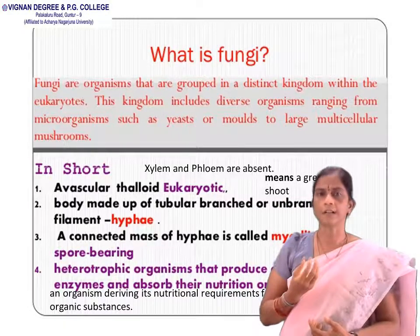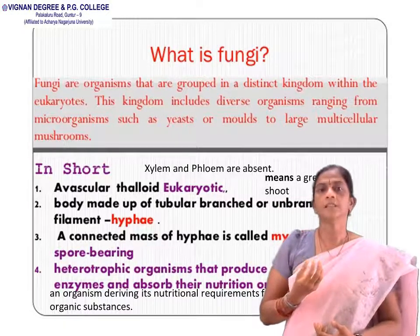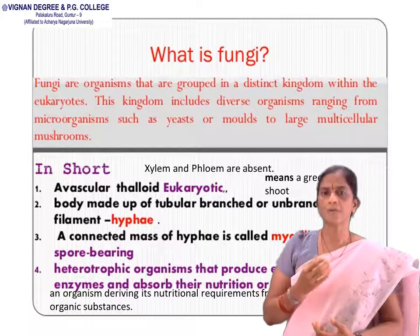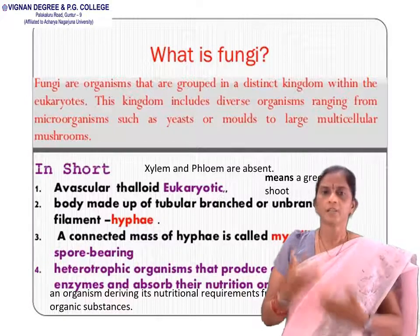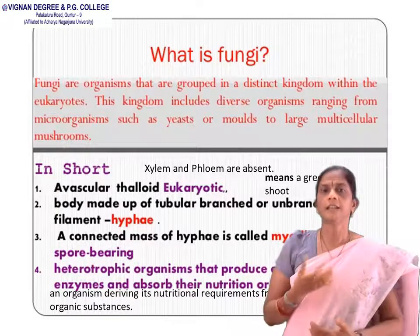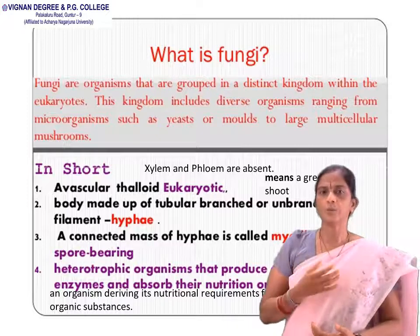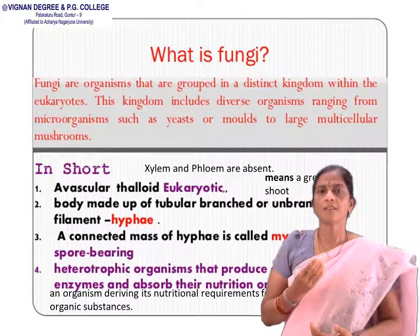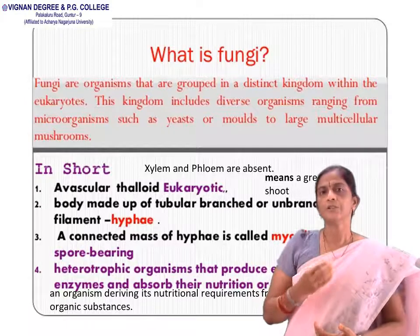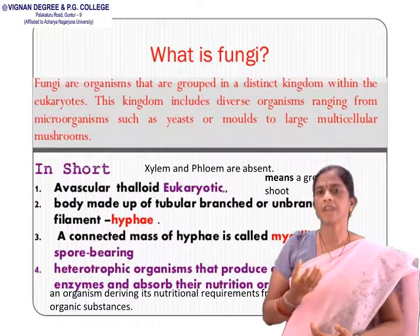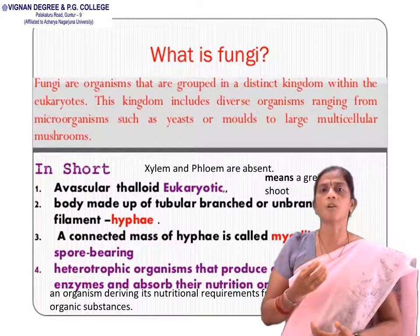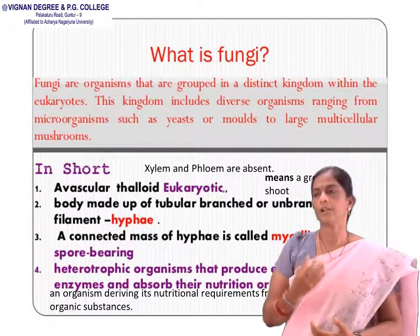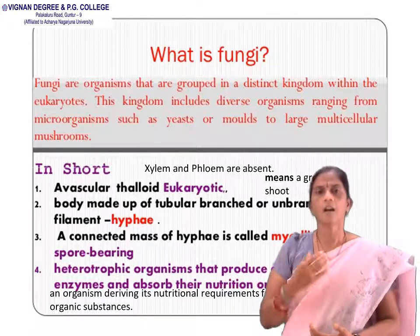They are heterotrophic organisms. They produce extracellular enzymes and absorb nutrients for use as nourishment. Heterotrophic means organisms which derive their nutritional requirements from complex organic substances.